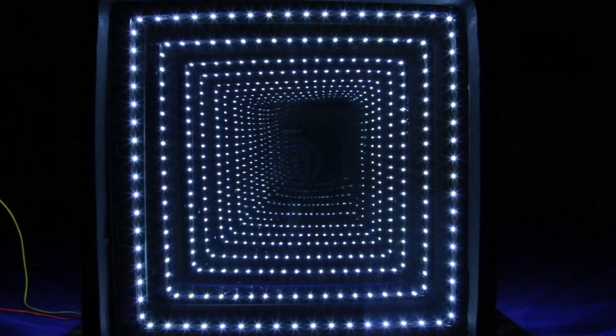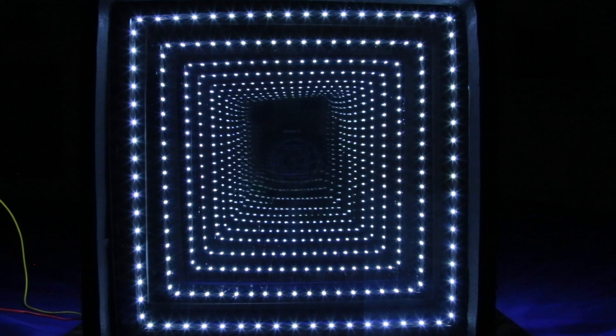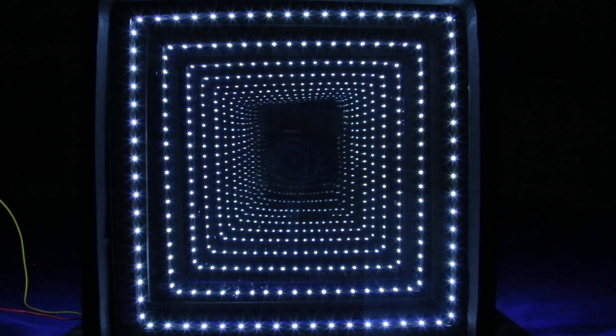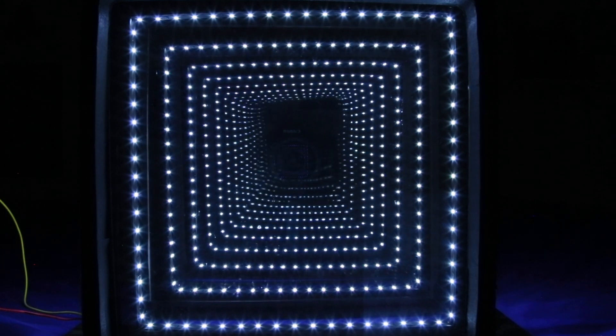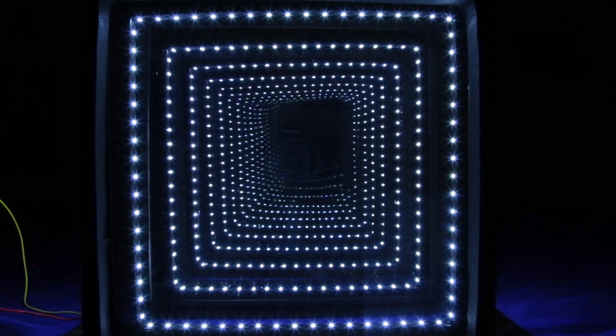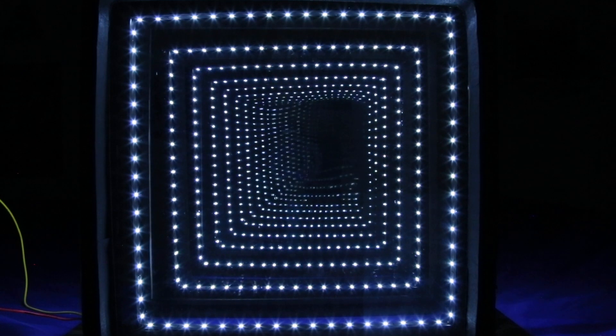Because the mirrors aren't perfect, each reflection loses some brightness. For any given set of mirrors, there's a finite number of reflections visible. This number is the same whether the mirrors are close or far apart.